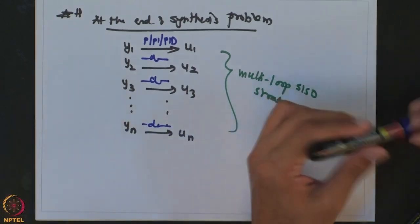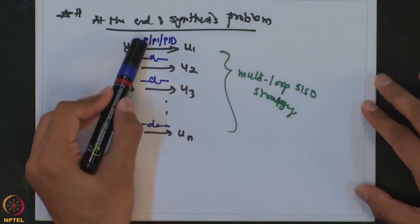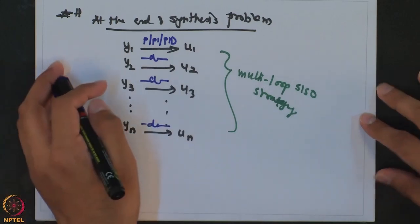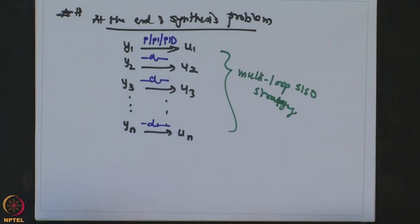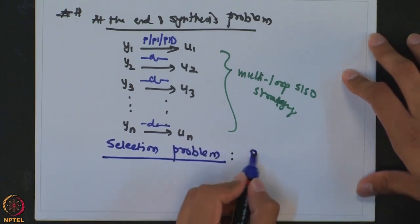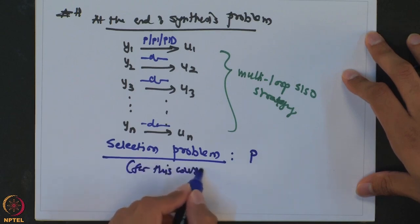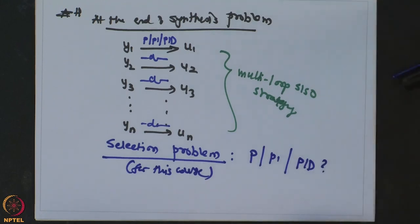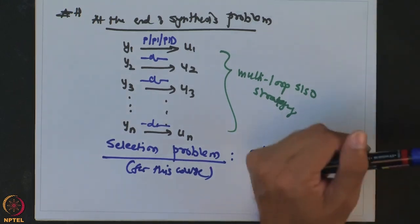If you want to really generalize this selection problem, it will include whether we are going to use any advanced control strategy, whether it is going to be a linear or non-linear controller, or an optimization-based controller. All those sorts of questions come into this synthesis or selection problem. For this course, we will be dealing with whether it is P, PI, or PID. In order to answer this particular question, we have to use some rules of thumb, which are based on analysis we have already done when we talked about the performance of the PID controller. So let us look at all these PID controllers and that will help us formulate this rule of thumb strategy.